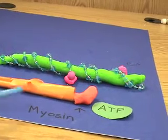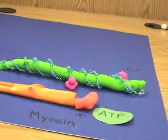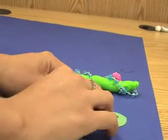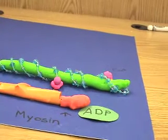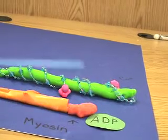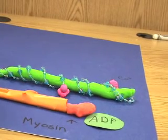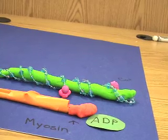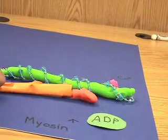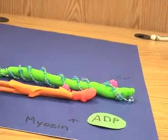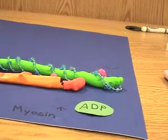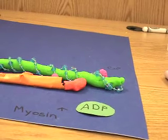When ATP is attached to the myosin head, it is in a low energy state. When ATP breaks down, it releases its energy into the myosin head and now becomes ADP. At this state, the myosin head jumps to the available active site of the actin, where it binds to it. This forms what is called a crossbridge.